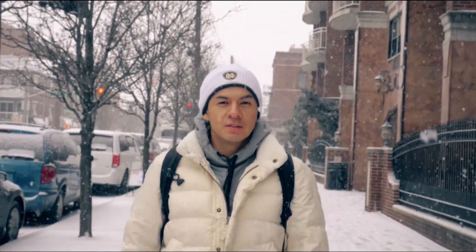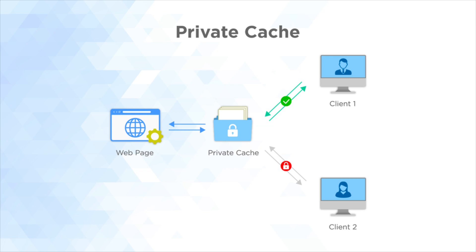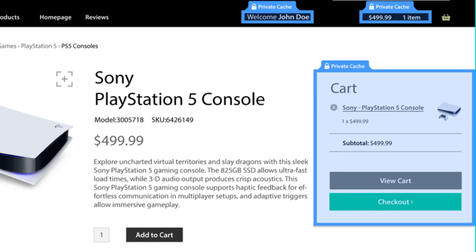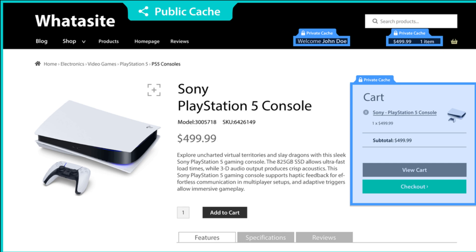So let's take a step back. I mentioned publicly cached pages and privately cached pages, so let me explain what they are. In straightforward terms, publicly cached pages are pages that are the same for everyone — such as blog posts — and they can be saved in a public cache. Privately cached pages are pages that contain content that is different from user to user, so they have to be cached for that specific user only. Lightspeed cache uses a public and private caching system: a public cache for the public content, and a private cache for the private content.